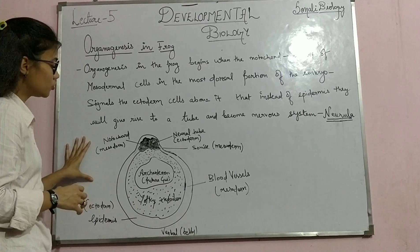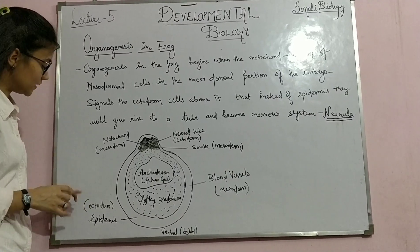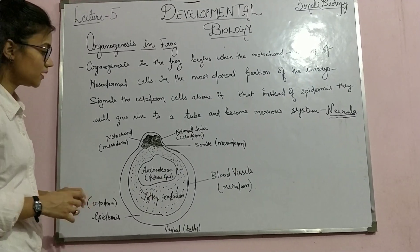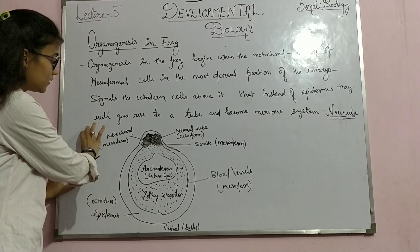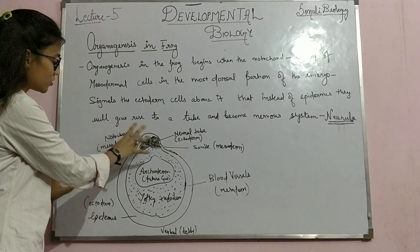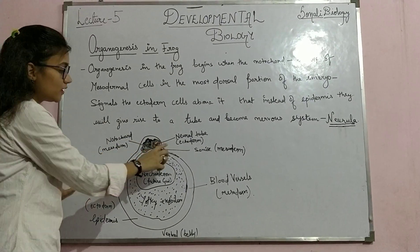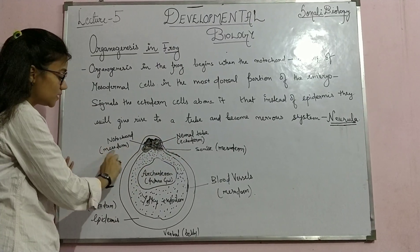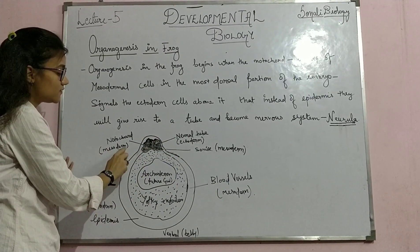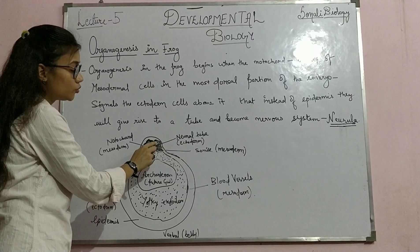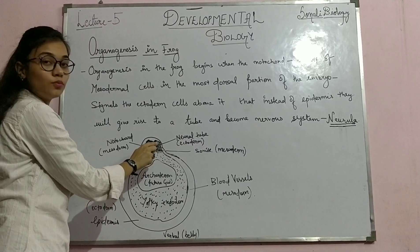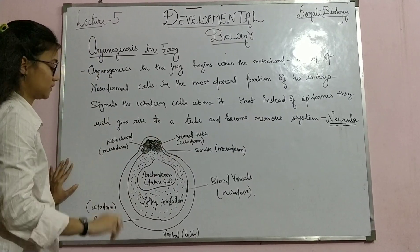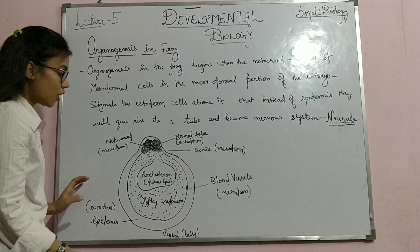In this diagram you can see that normally ectoderm will give rise to epidermis. But here, in the dorsal part, it will give rise to a neural tube because these mesodermal cells will signal these cells to move towards the development of the neural tube instead of the epidermis.